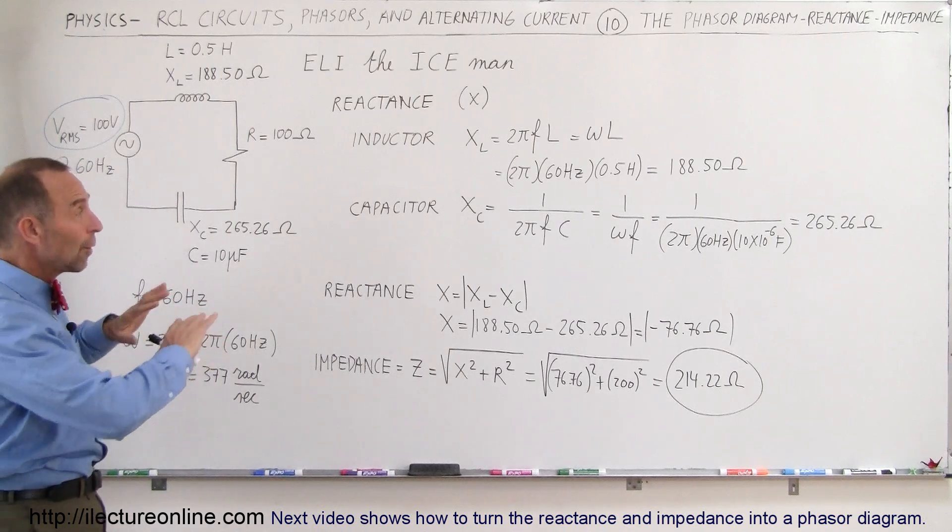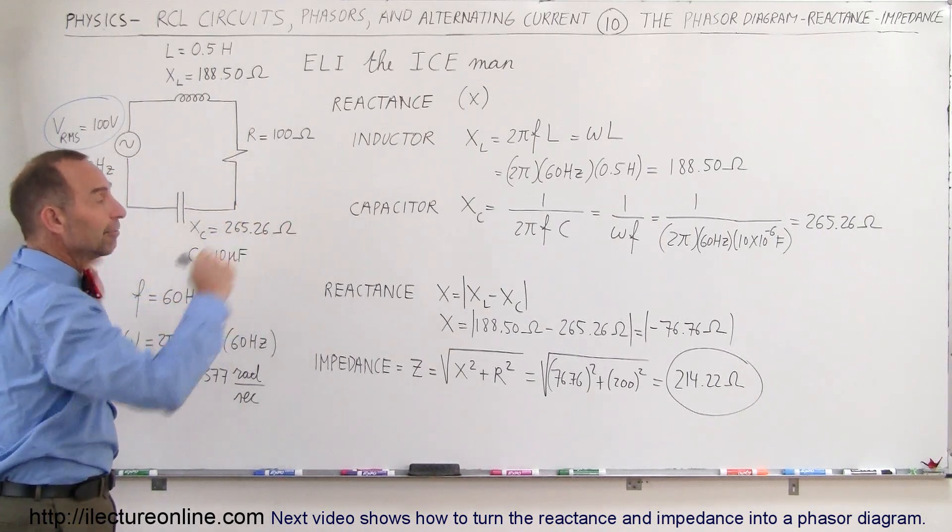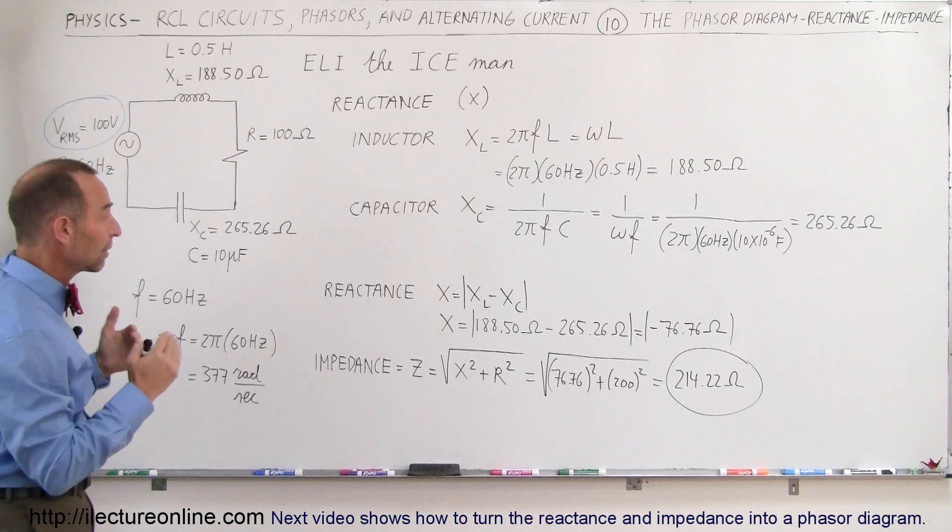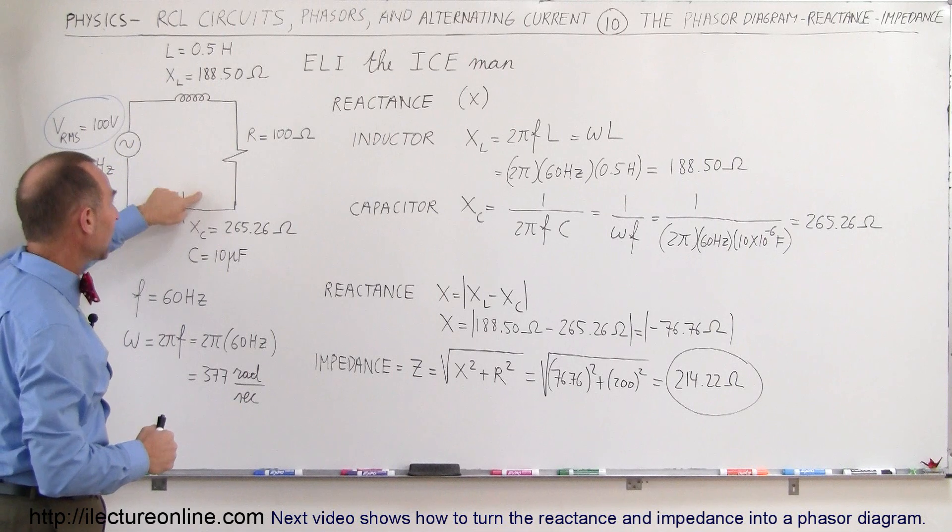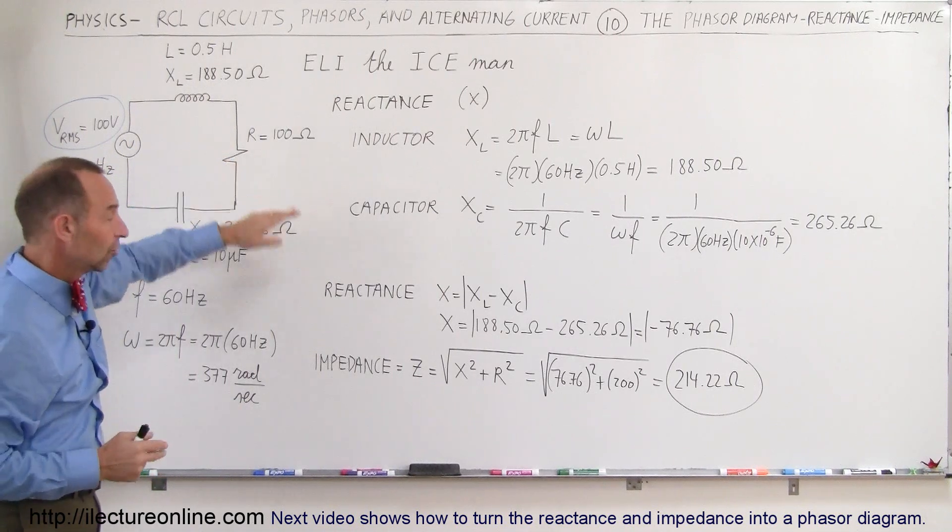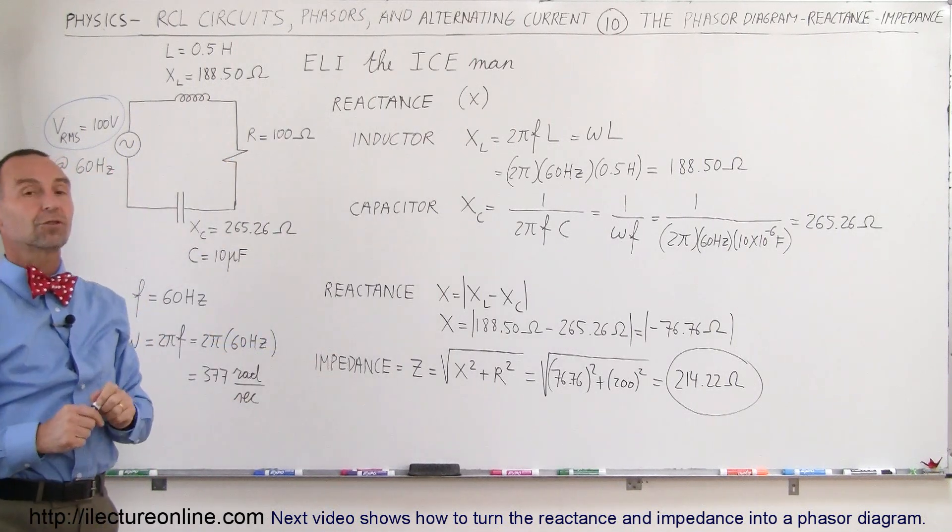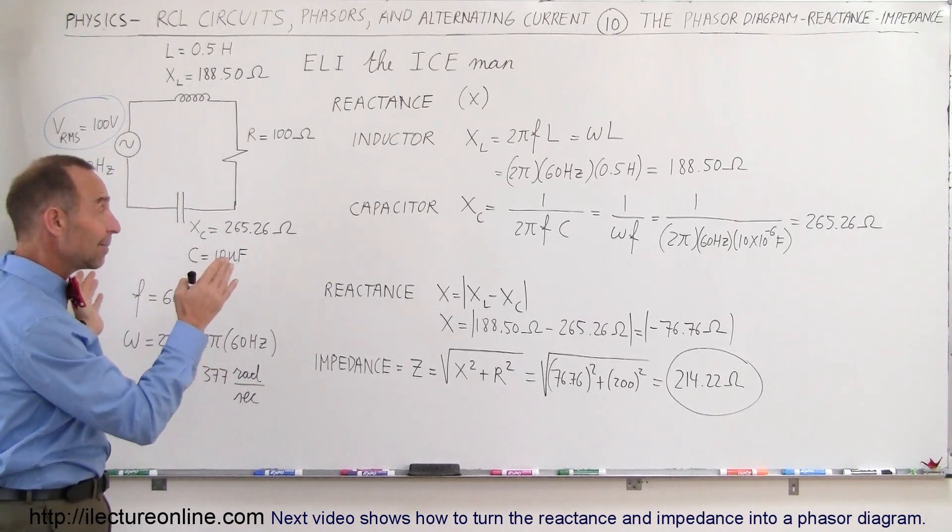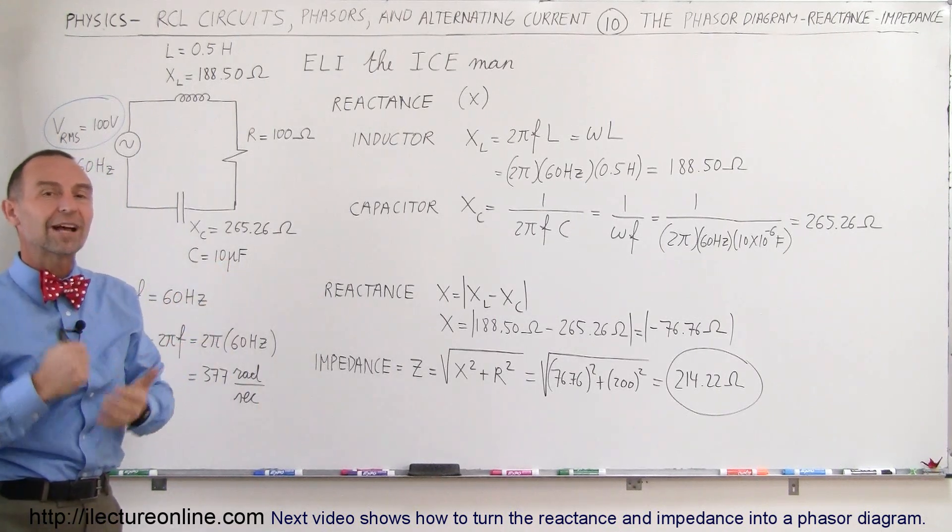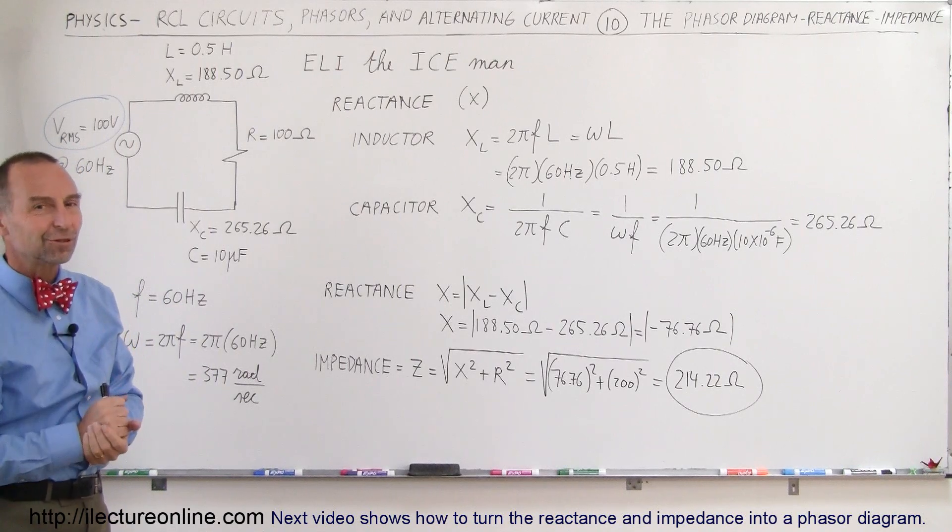So in the next video, we'll go ahead and show you how to draw that out on a phasor diagram, but for now, we just want to make sure that you can take an example like this and find the reactances of the inductor and the capacitor, mix that in with the resistance, then find the total impedance of the circuit. That's important to know how to do that, and then in the next video we'll take the same example and show you how to draw the phasor diagram for that. So stay tuned if you're still interested.